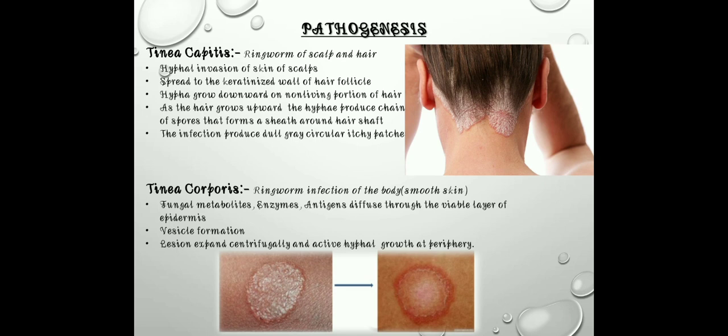Next is pathogenesis. We will discuss the diseases, which are ringworm infections. The first is tinea capitis — ringworm of the scalp and hair. In this disease, the hyphae invade the skin of the scalp, then spread to the keratinized wall of the hair follicle. Hyphae grow downward on the non-living portion of the hair. As the hair grows upward, the hyphae produce a chain of spores that forms a sheath around the hair shaft. The infection produces dull gray itchy patches.